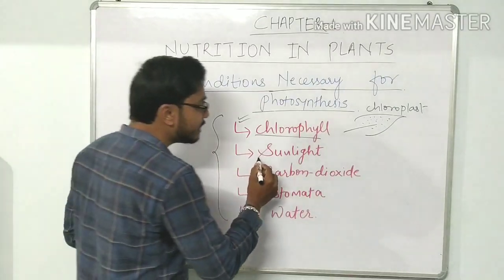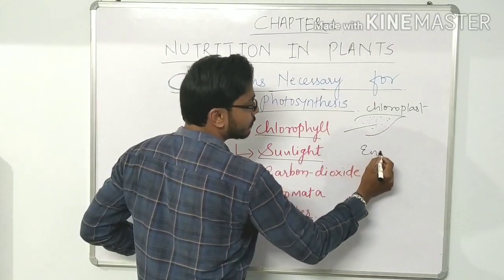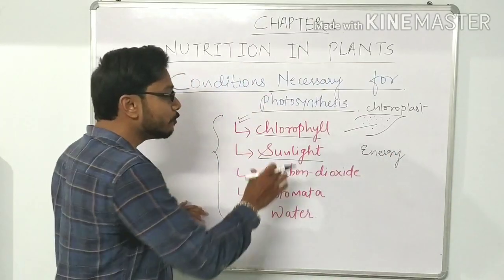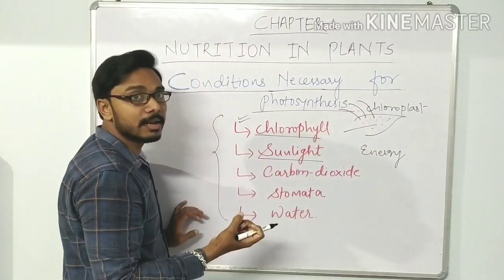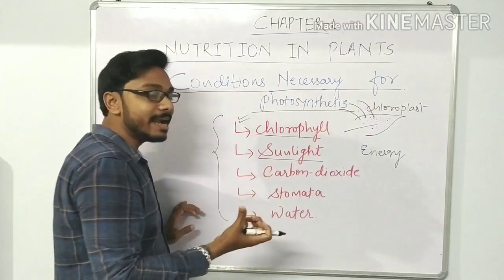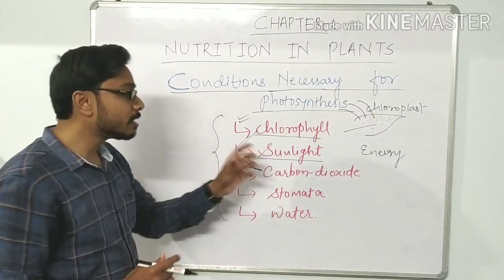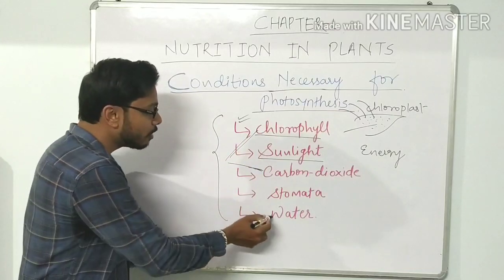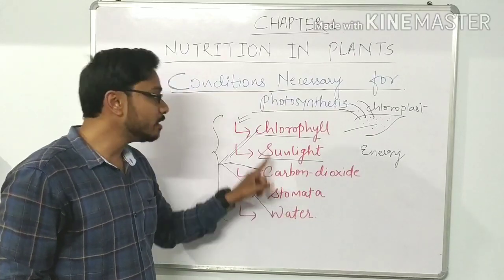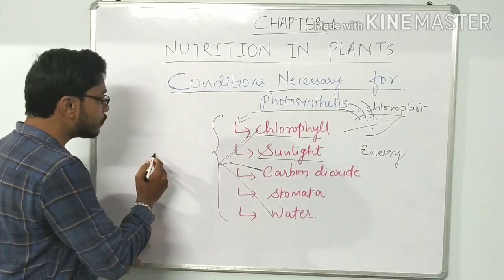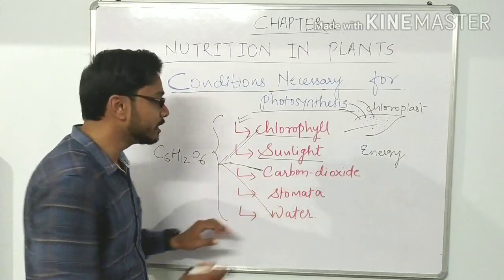The next condition is sunlight. Sunlight is one of the most important factors for photosynthesis to occur. Sunlight carries energy, and when it falls on the leaf, the chlorophyll absorbs that sunlight energy. This absorbed energy helps carbon dioxide to combine with chlorophyll and water for the production of glucose (C6H12O6).